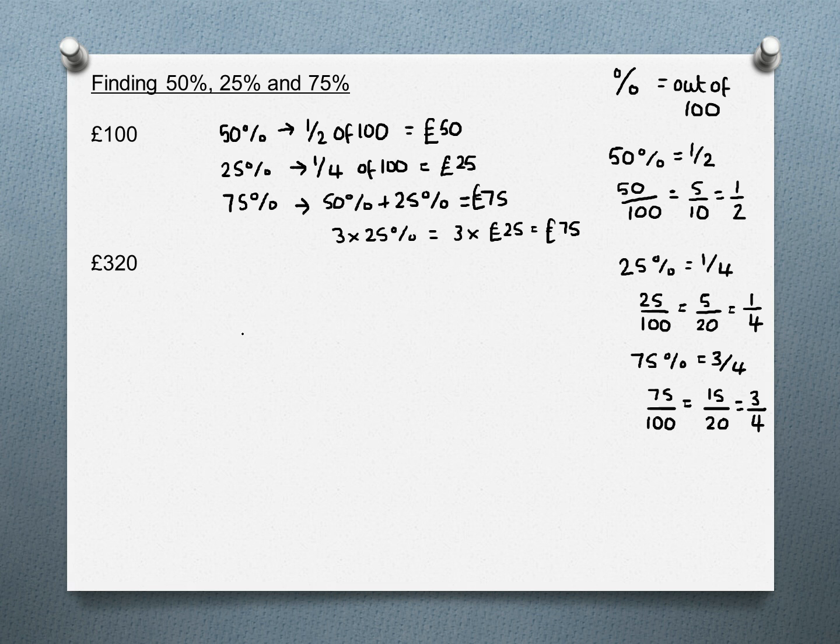Let's try a couple more. With 320 pounds, 50% is half, so divide by 2: half of 320 is 160. 25% is divide by 4, so that's 80. Here notice you could either do 320 divided by 4, or take your value for 50% and just half it again. For 75%, we can add these two together or triple this value: 240 pounds.